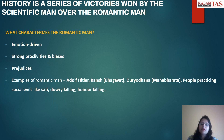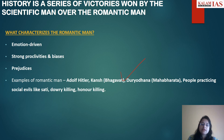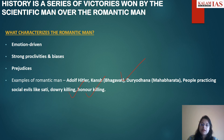For example, you can give Adolf Hitler, Duryodhana in Mahabharata, or people practicing social evils like sati, dowry killing, and honor killing — where every decision is based on certain stereotypes and prejudices, lacking evidence, facts, and scientific reasoning. That is how we can characterize the romantic man.